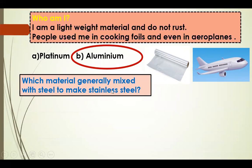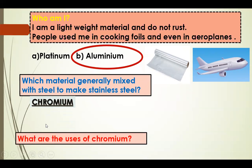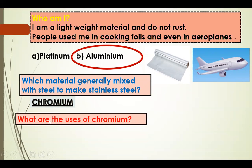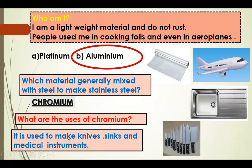Which material is generally mixed with steel to make stainless steel? The answer is Chromium. What are the uses of Chromium? It is used to make knives, sinks and medical instruments.